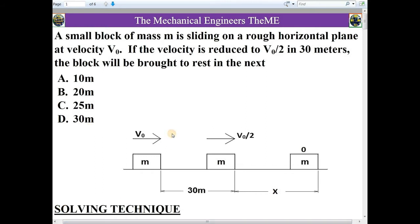Now I will analyze the question. Here is the picture of the small block. The mass of the small block is M. Initially, the small block is sliding on a horizontal plane with velocity V0. After a distance of 30 meters, the velocity of the small block is reduced to V0/2. And for the next part of the distance, the small block comes to rest. So in this question, we have to find the distance through which the small block came to rest — whether 10 meter, 20 meter, 25 meter, or 30 meter.